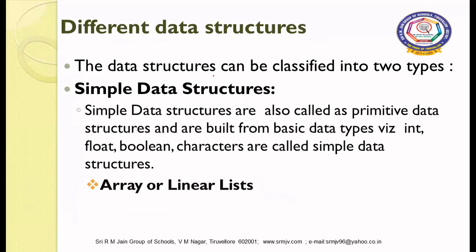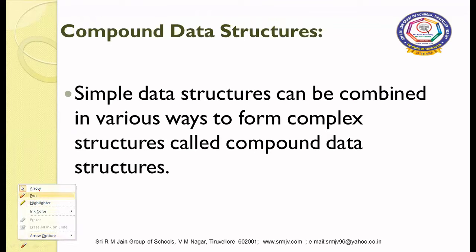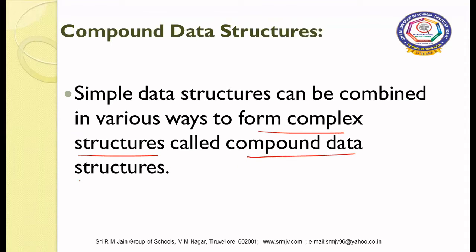Data structures are classified into two main types. The first is simple data structures, also called primitive data structures, which are built from basic data types like integer, float, boolean, and character. Examples of simple data structures include arrays or linear lists. The second type is compound data structures, where simple data structures are combined in various ways to form more complex structures.